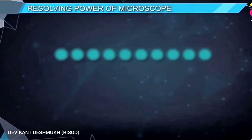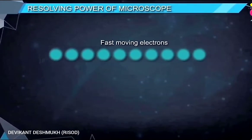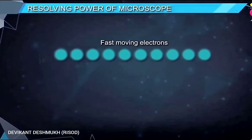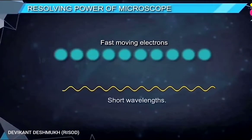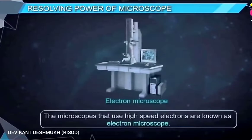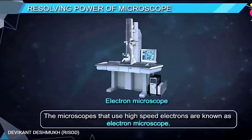We know that fastest moving electron exactly behave as a wave of very shorter wavelength. Therefore, the microscope that use high-solving electron